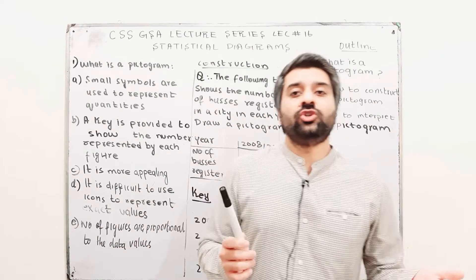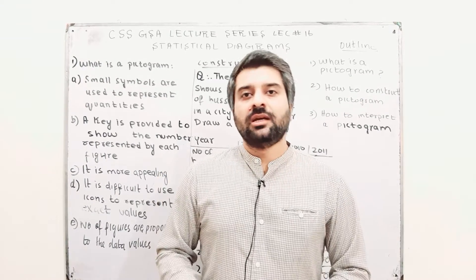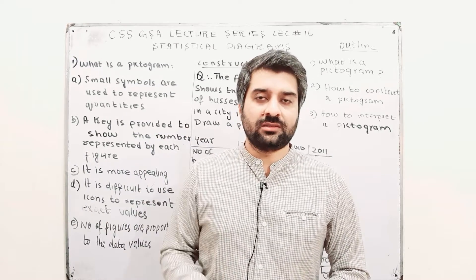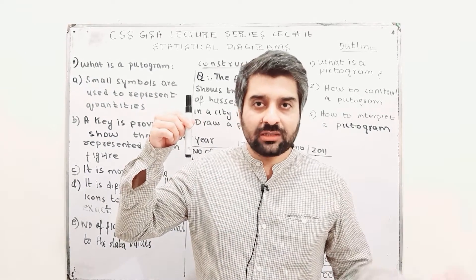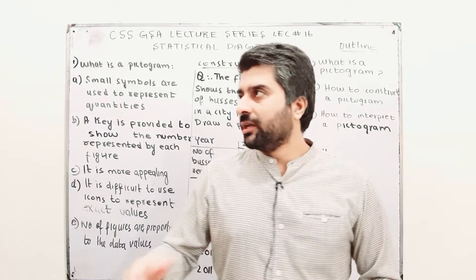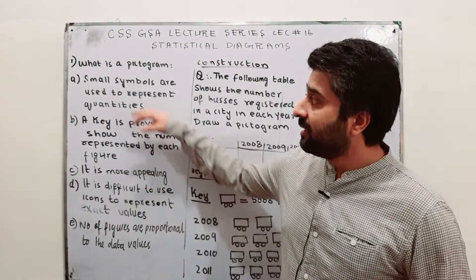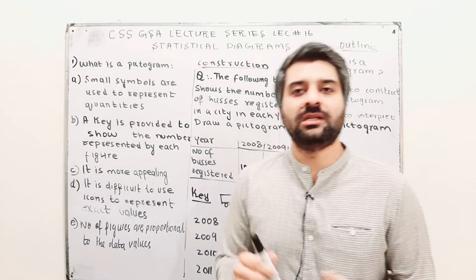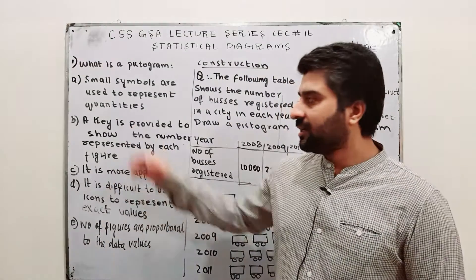The key tells you that one diagram of a marker represents how many actual markers. You can use your own key — you can say one marker represents twenty markers. The key varies and is your choice. The basic characteristic of a pictogram is that small symbols are used to represent quantities, and a key is provided to show how many numbers each diagram represents.